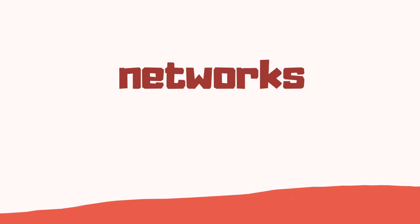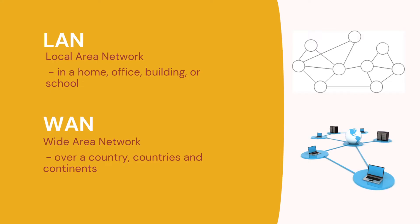So what types of networks do we have? Well we can have local area networks called LANs, that cover an area such as your home, an office, a building, or even a school. Now if we're going to have a network covering a large area like a country, this would be called a wide area network — a WAN. So we have LANs and WANs.